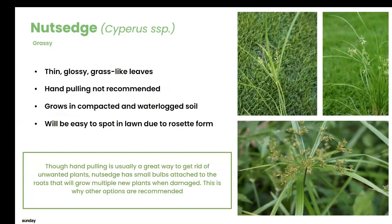Nutsedge is kind of the opposite problem from spurge. You'll start to see it if you have a frequently moist lawn — if the soil is compacted and stays really wet days after watering, or if you water frequently. It's pretty noticeable: it comes up in a rosette form, very waxy and shiny, a very light green — it sticks out well. This is not something I'd recommend hand-pulling, because the roots have bulblets attached to them. Once you pull that weed, it will make two more, like a Hydra. Instead, mow often, bag the clippings, and if you want, yank the leaves so they come off without the roots — that depletes its energy source. If you see it, think about aerating and adjusting your watering schedule to be a little less frequent.